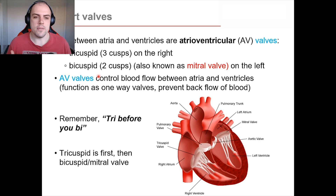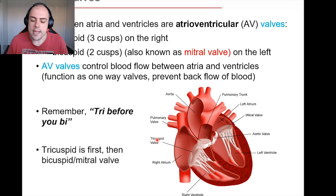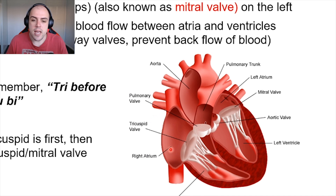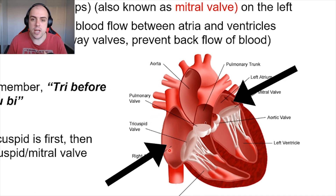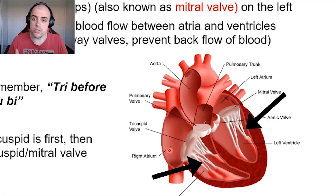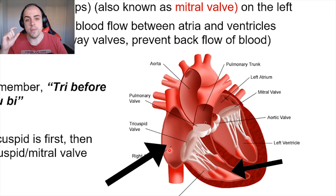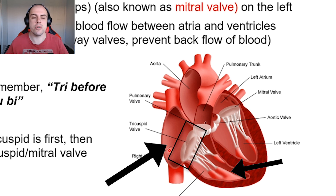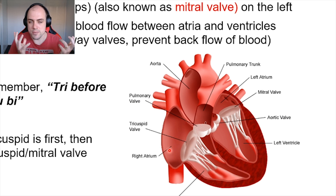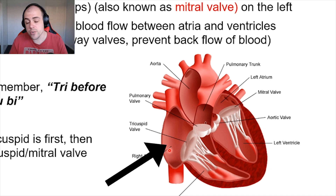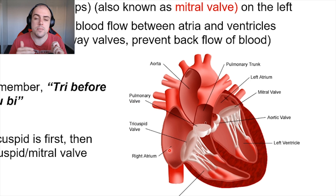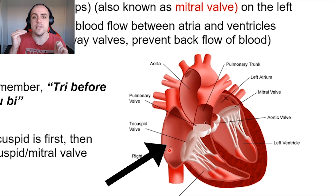Looking at our heart valves and the internal flow of blood within the heart, we again see our four chambers: our right atria, left atria, right ventricle, and left ventricle. Separating the atria and the ventricle are what are called our atrioventricular valves. The key word is in the name — atrio for atrium and ventricular for ventricle — so these are valves located between the atria and the ventricle.